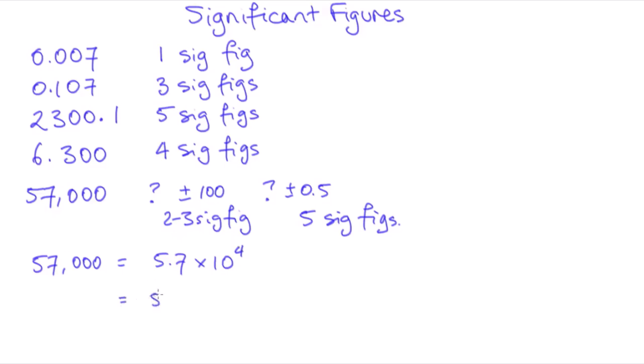But if I was to write it like this, then all those zeros that I've specifically written down after the decimal point, these ones count as significant. So this is two sig figs again and this is five.